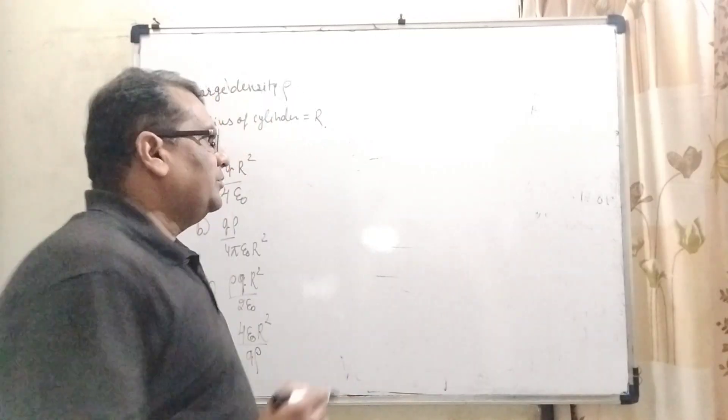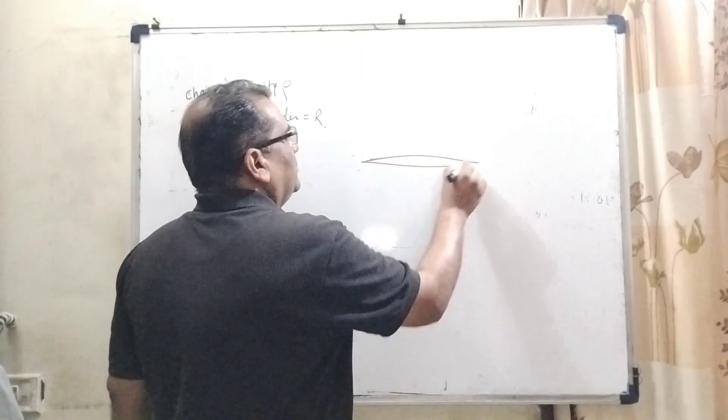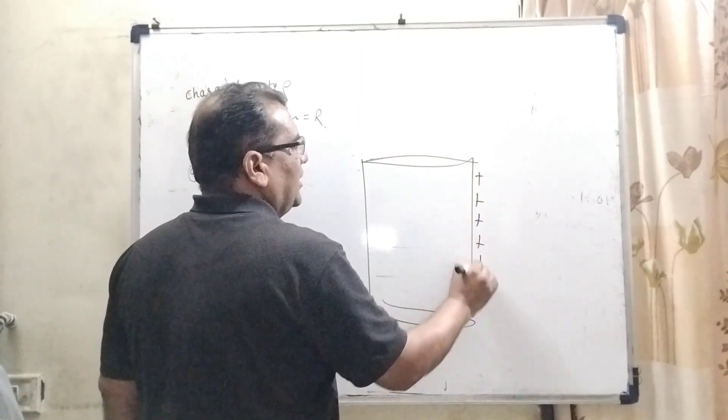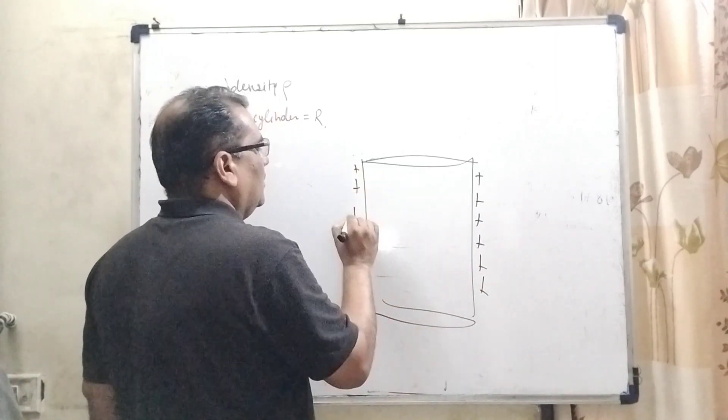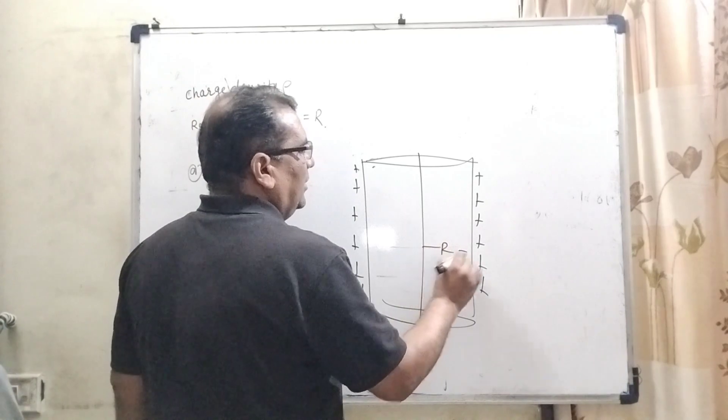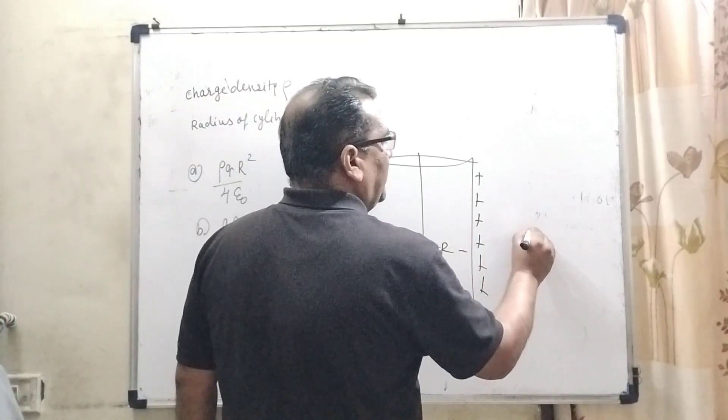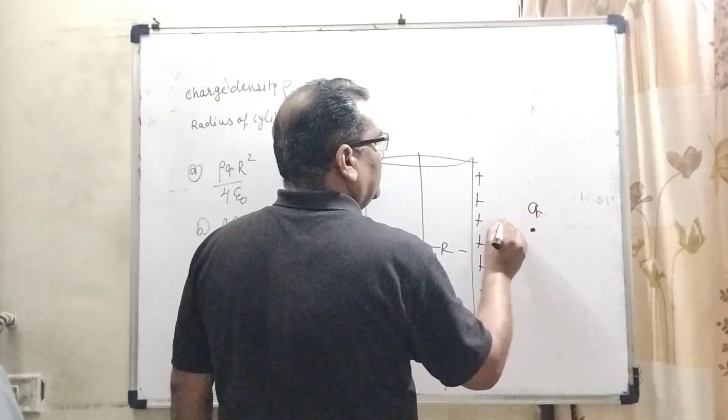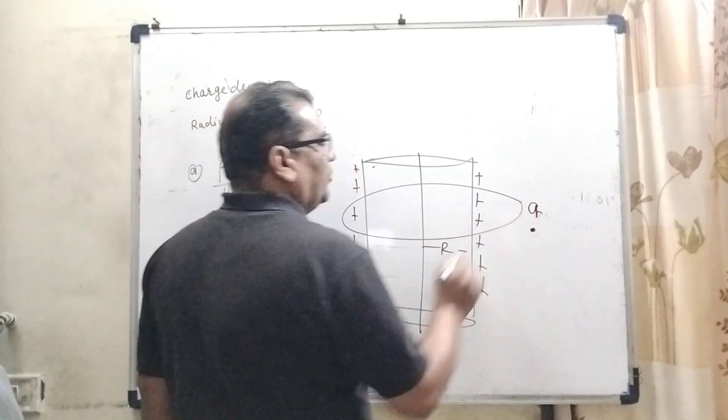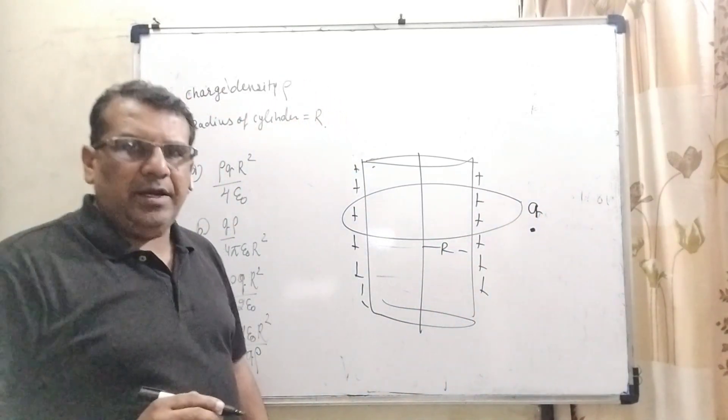In this question, we have given a uniformly charged distribution which has charge density ρ. Its radius is capital R and a charged particle which has charge Q, revolves around the cylinder. And we have to calculate the kinetic energy.